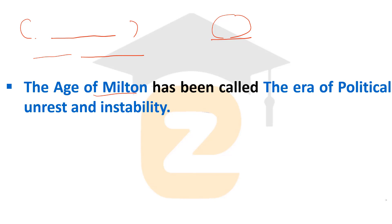The age of Milton has been called the era of political unrest and instability. During Milton's time, from 1608 to 1674, there was a civil war and an unstabilized ruling government, which is why this age is known for political unrest and instability.